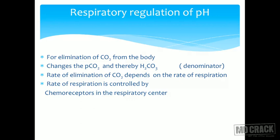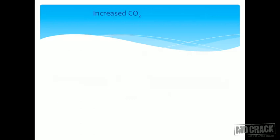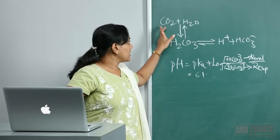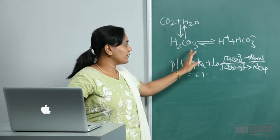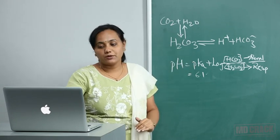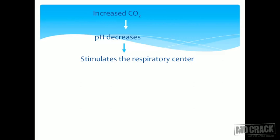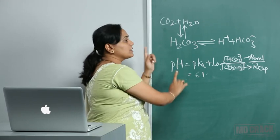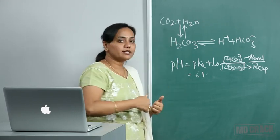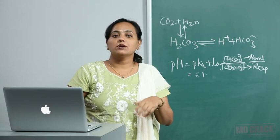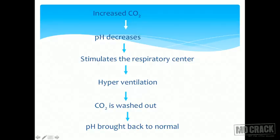Whenever there is increased carbon dioxide, the pH decreases — increased CO2 leads to increased production of acid. This stimulates the respiratory center, causing hyperventilation. When you hyperventilate, this is all reversible: carbon dioxide gets eliminated out from the body and the pH comes back to normal. So carbon dioxide is washed out and pH is brought back to normal.